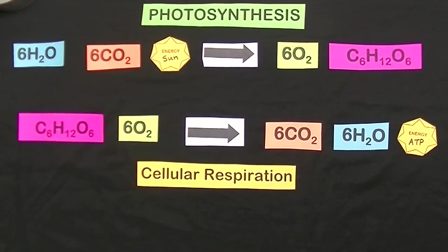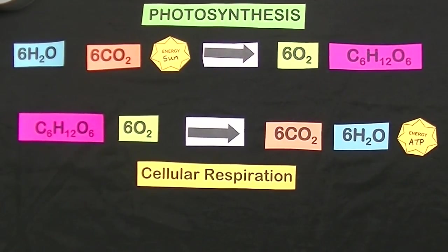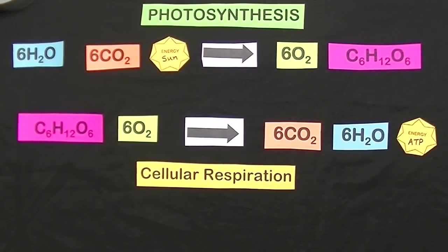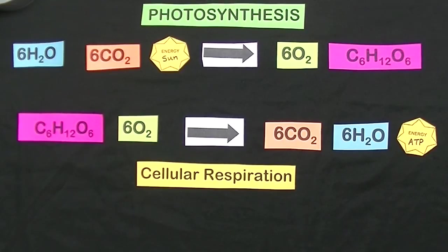Let's talk about these two reactions. Photosynthesis requires water, carbon dioxide, and energy from the sun to get started. Those are the reactants. The products are oxygen and glucose.